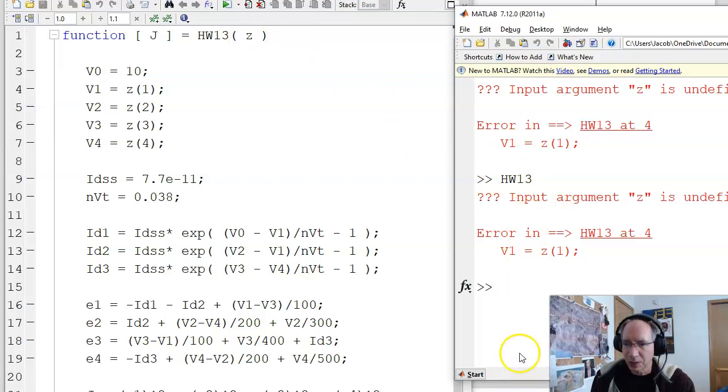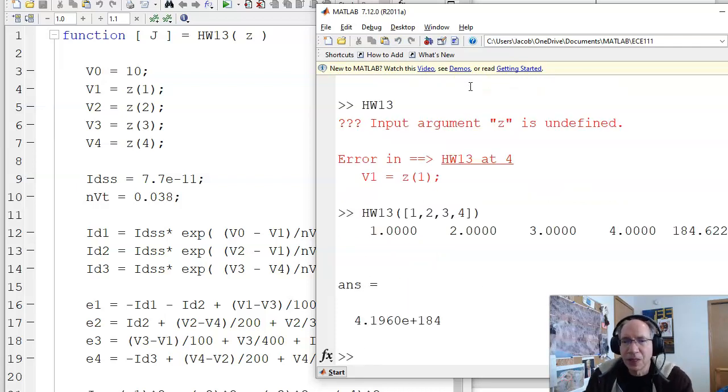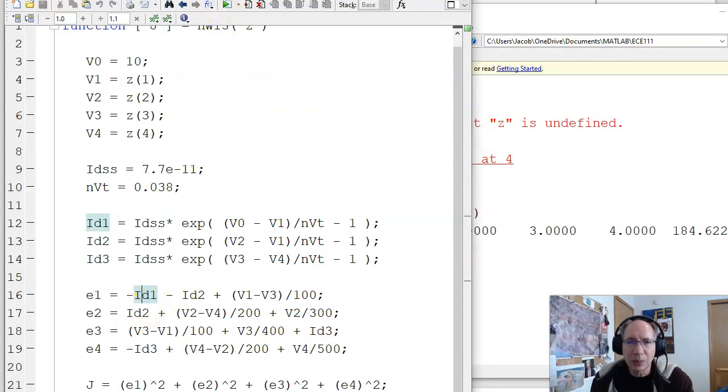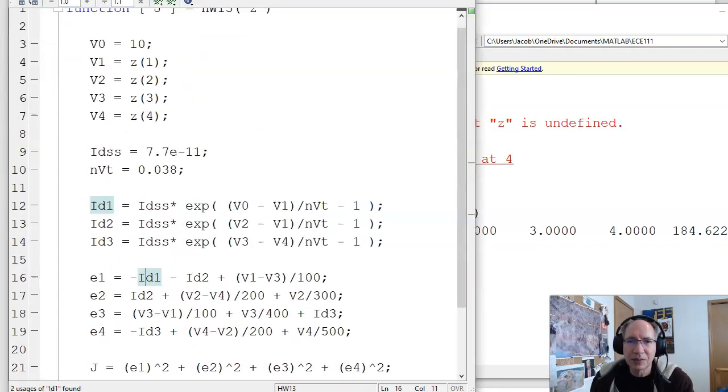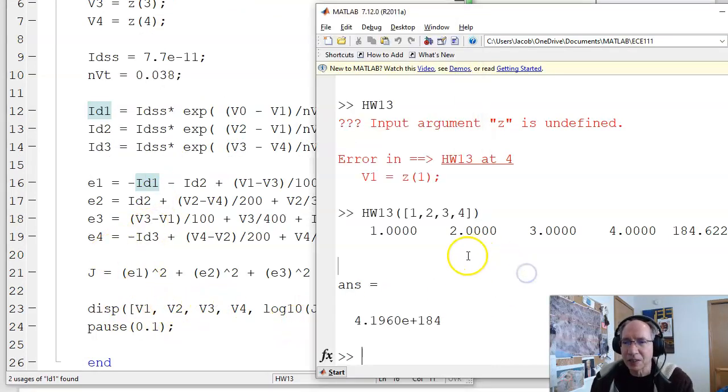So what I could do is tell it, I think the voltages are 1, 2, 3, 4 volts. Am I right? And it goes through here. Calculates the currents. Finds the current imbalance. Returns the sum squared of the current imbalances. And then displays the voltages and the log base 10 of my error. And it says, that was a really bad guess. The sum squared error is 10 to the 184th.